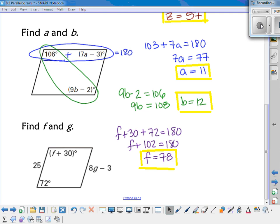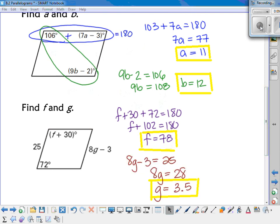So to solve for f, you should have added f plus 30 and 72 and set them equal to 180. If I combine my like terms, f plus 102 equals 180, and so f is equal to 78. And when you solve for g, opposite sides are congruent. So 8g minus 3 has to equal 25. You end up getting that g is equal to 3.5.